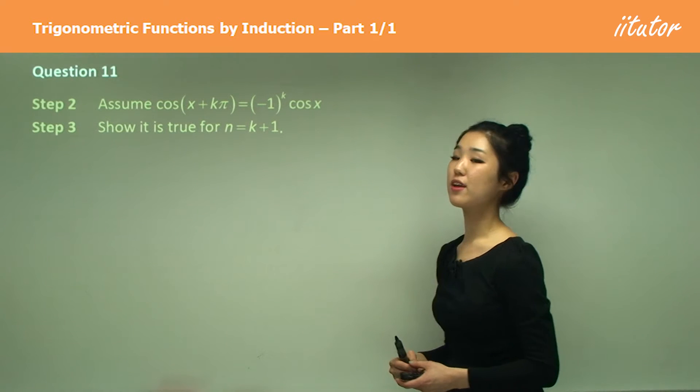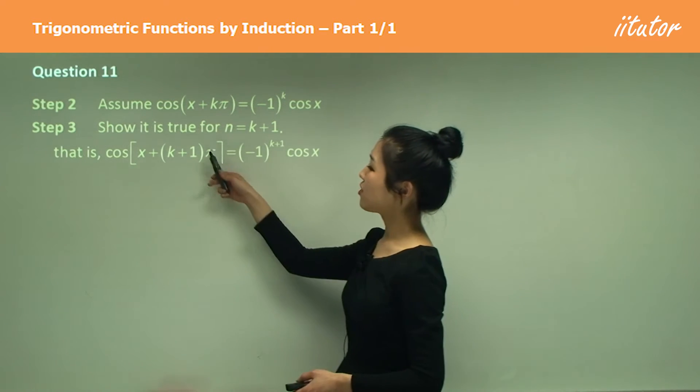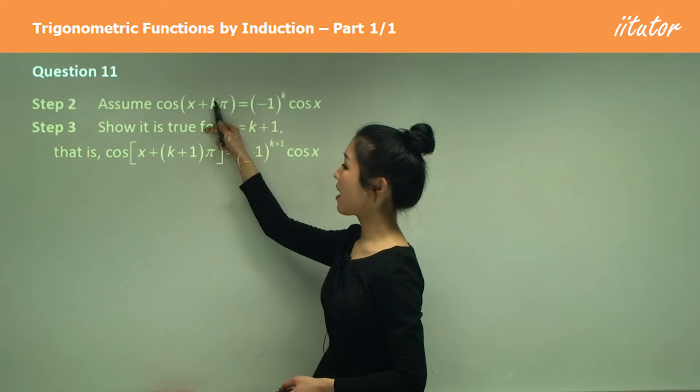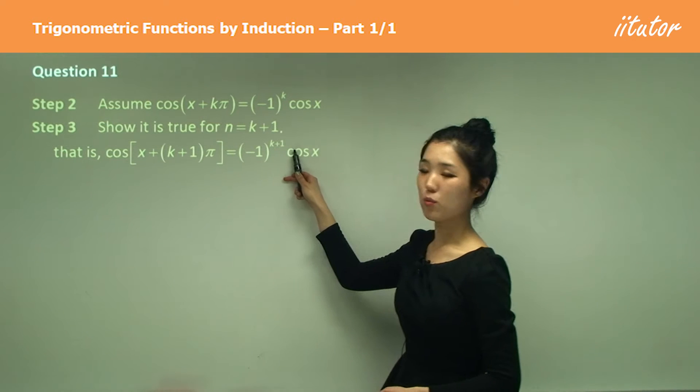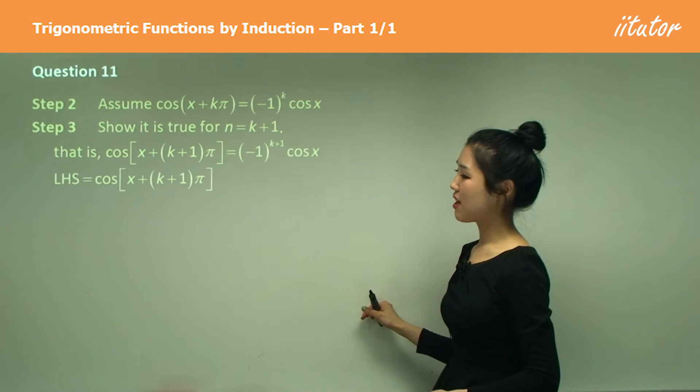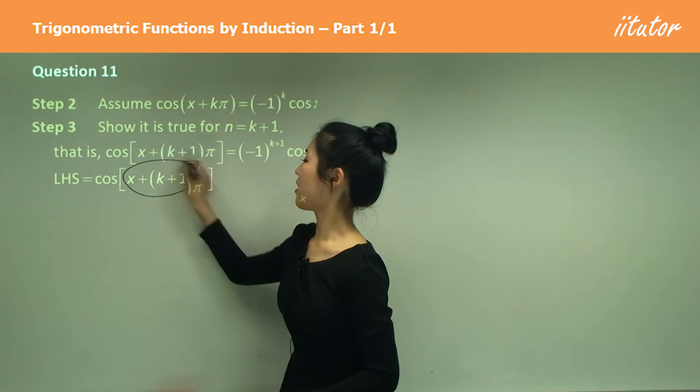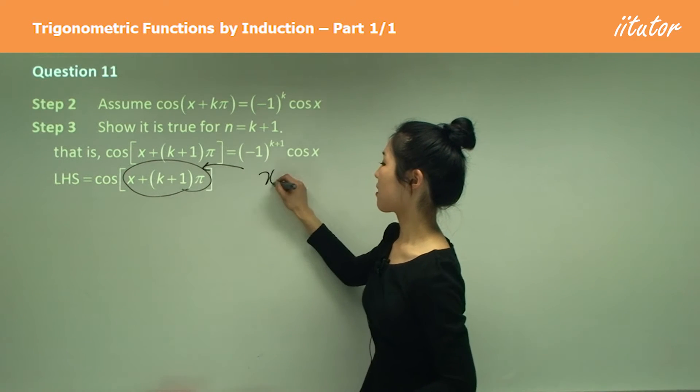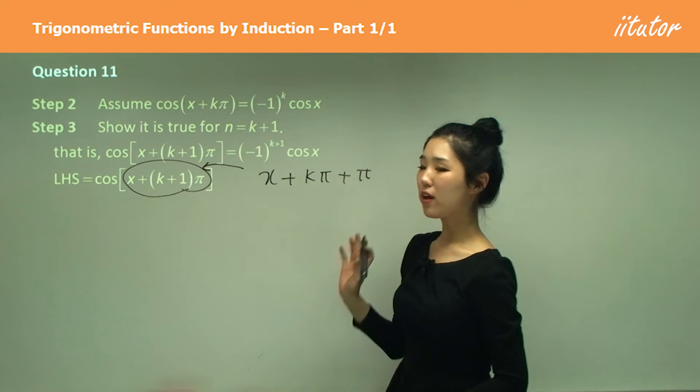Now I want to prove it's true for n equals to k plus 1. So that means I'm going to put k, instead of k, I'm going to put k plus 1. And here it's going to be k plus 1. So let's start with the left hand side, which is just that. If I expand this inside, it's going to be x plus k pi plus pi.